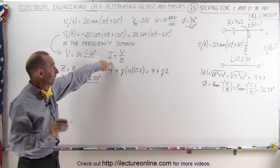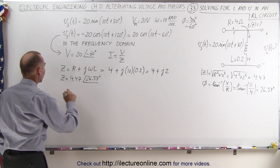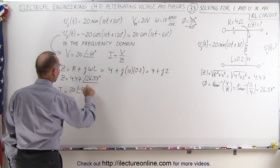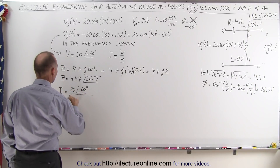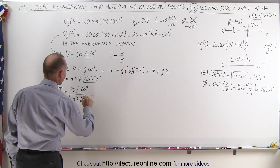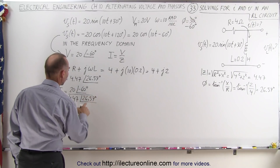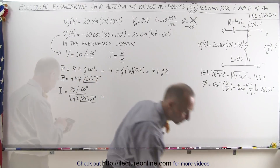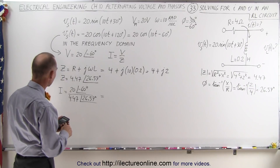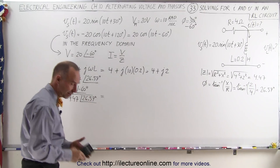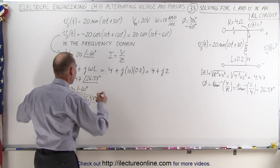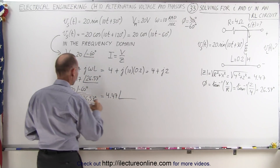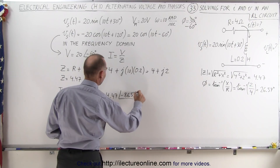Now we're ready to calculate the current in the frequency domain, since I equals V over Z. So I equals the voltage 20 at a phase angle of minus 60 degrees, divided by the impedance 4.47 at a phase angle of 26.57 degrees. The magnitudes divide to give 4.47 — because the square root of 20 divided by the square root of 20 is just the square root of 20, which is 4.47 — and the phase angles subtract to give minus 60 minus 26.57, which is minus 86.57 degrees.